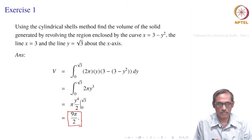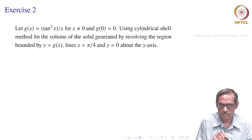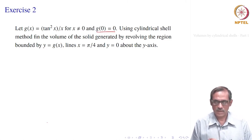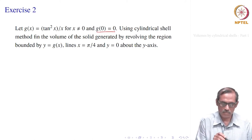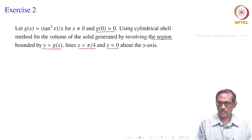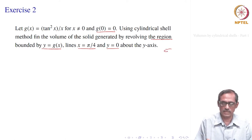Let us go to the next problem. We have the function g(x) = tan²x / x for x ≠ 0, and g(0) = 0. At x = 0, tan²x / x is not defined, so we redefine it as g(0) = 0. We have the region bounded by y = g(x), the line x = π/4, and the line y = 0, and this region is revolved about the y-axis. We want to find the volume of the solid so generated.